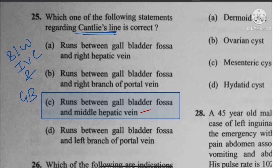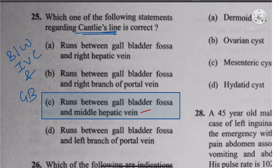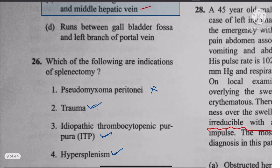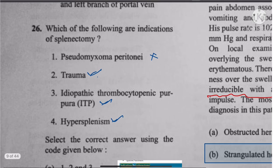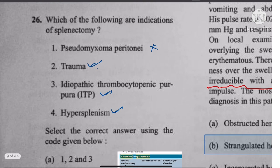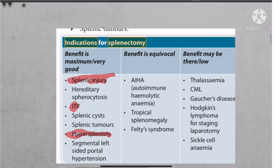Question 25: Cantlie's line — the right definition is between the IVC and the gallbladder. Among the given statements, the best option is that it runs between the gallbladder fossa and the middle hepatic vein.